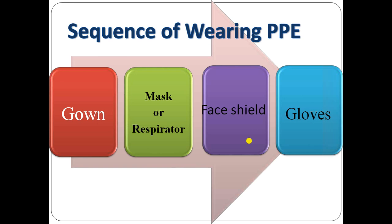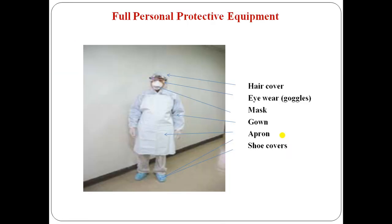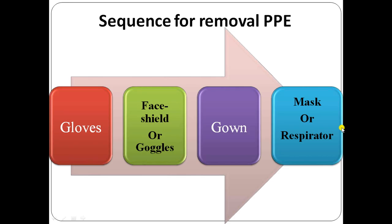The sequence for wearing PPE is: first put on the gown, then mask or respirator, then face shield, and then gloves. As you can see in the diagram, full PPE includes hair cover, eyewear goggles, mask, gown, apron, and shoe covers.